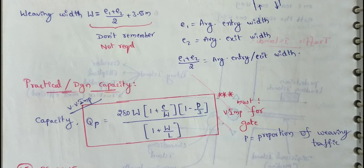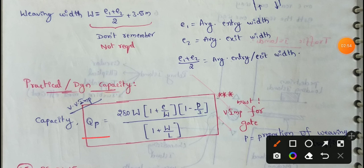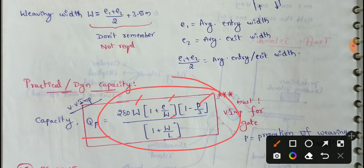All of this, the practical capacity is QP. So QP equal to - E formula. So this is the weaving width, that means E means average entry or exit width. W is weaving width. P means proportion of weaving traffic. L is weaving length. So we can talk about any values, we can talk about practical capacity or design capacity. We can easily measure. So this is the weaving width, that means practical capacity.